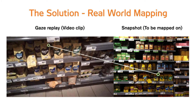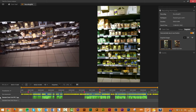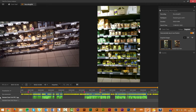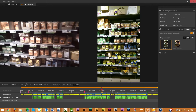Now TobiiPro is introducing a solution to this problem. We call it real world mapping. Real world mapping is the concept of automatic mapping in the real world. As you can see in this image, the gaze point has been accurately mapped onto the snapshot — this was done using real world mapping. With this solution, you can save a considerable amount of time and money, allowing you to use more participants or to add extra stimuli to your study.